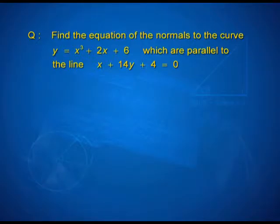We have another problem where the information is indirect. Find the equations of the normals to the curve y = x³ + 2x + 6 which are parallel to the line x + 14y + 4 = 0. What is given directly or indirectly is that the normal to the curve is parallel to this line, so the slope of the line will be the same as the slope of the normal. You know the slope of the normal — what is the second thing you need? The point of contact. So our main work is to get that point of contact from the given information.